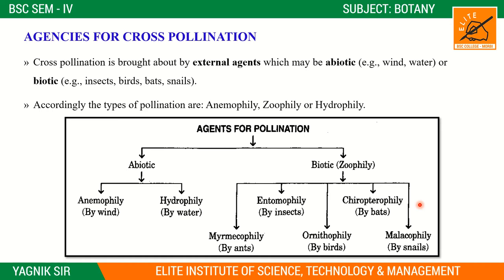Cross pollination is brought about by external agents, which may be abiotic or biotic. Abiotic agents include wind and water. Biotic agents are living organisms such as insects, birds, snails — all are responsible for pollination and are called pollinators.